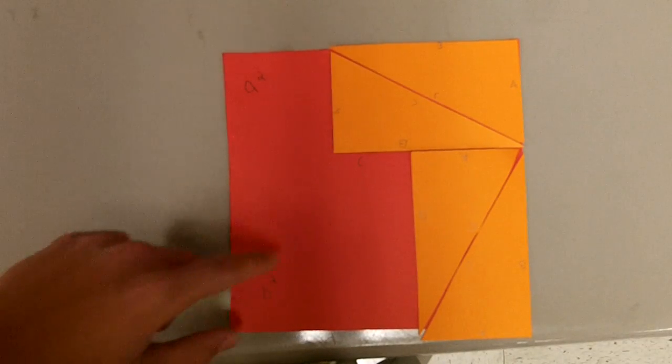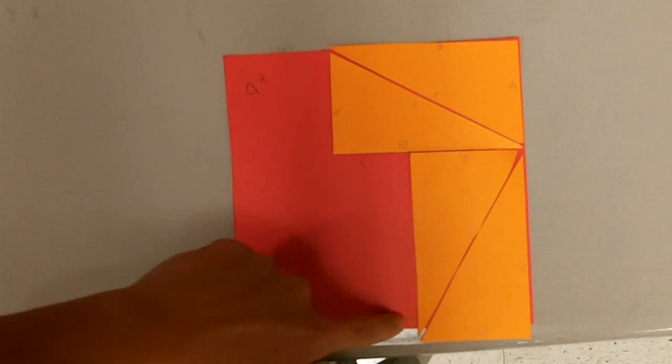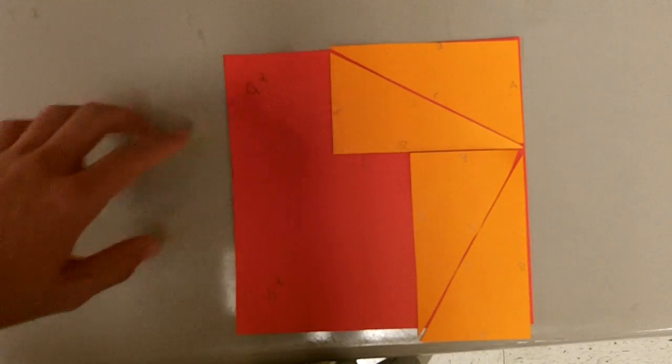And then there's B squared right here, because this is B, this is B, this is B, and this is B. So that's B squared.